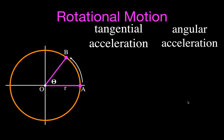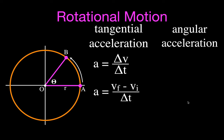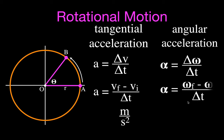Now we can talk about acceleration — tangential and angular acceleration. The tangential acceleration is the change in velocity over change in time: the final minus the initial velocity divided by the change in time, measured in meters per second squared. The angular acceleration is given the symbol alpha — the Greek letter alpha — and it's the change in angular velocity over change in time: the final minus the initial angular velocity divided by time, measured in radians per second squared.